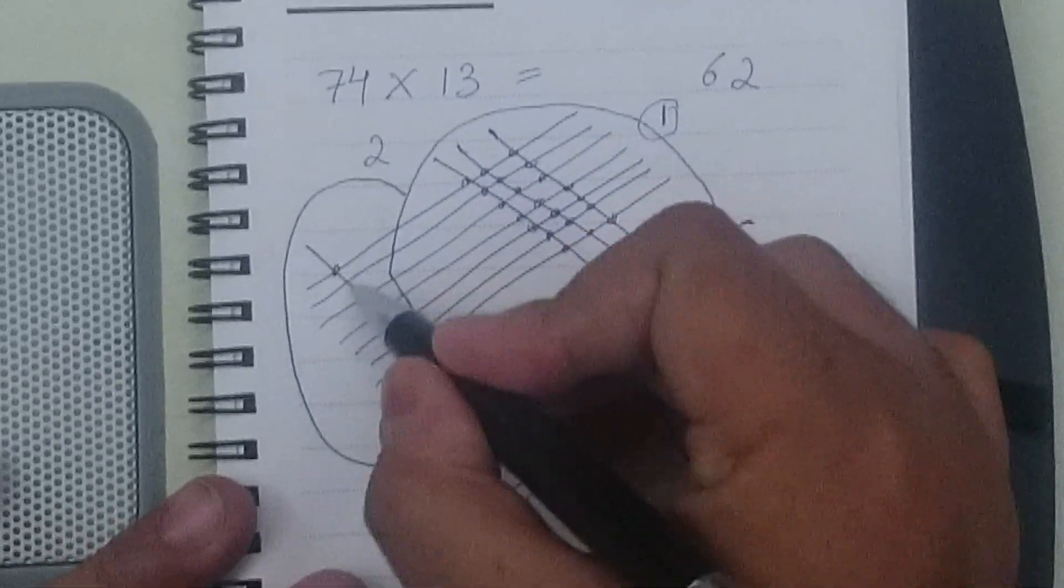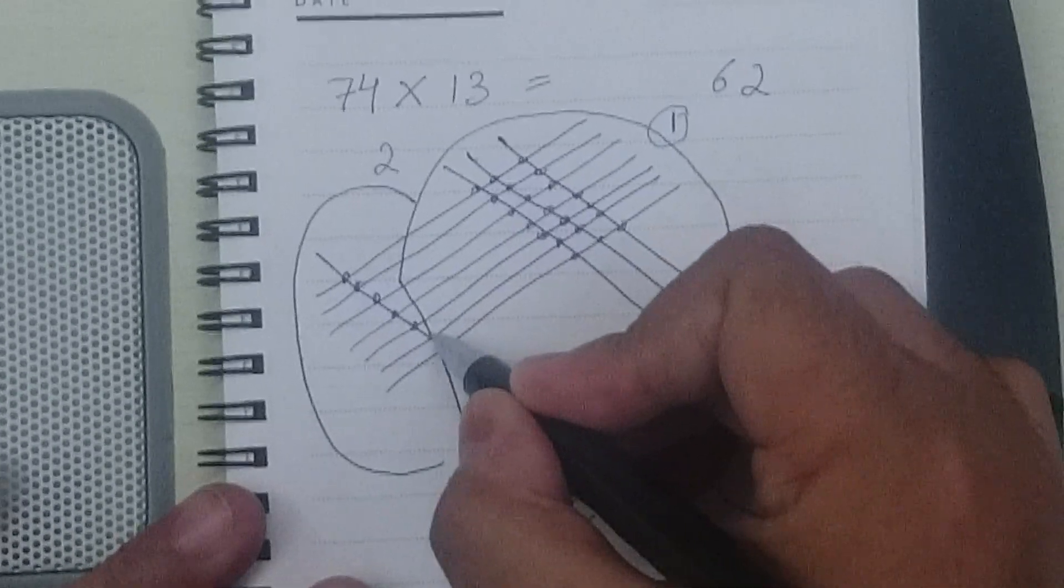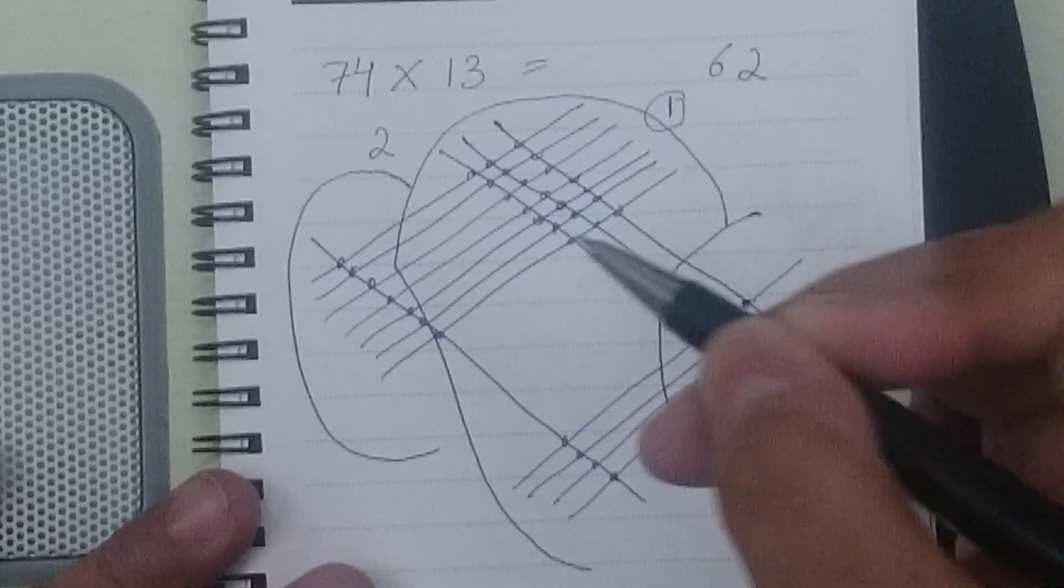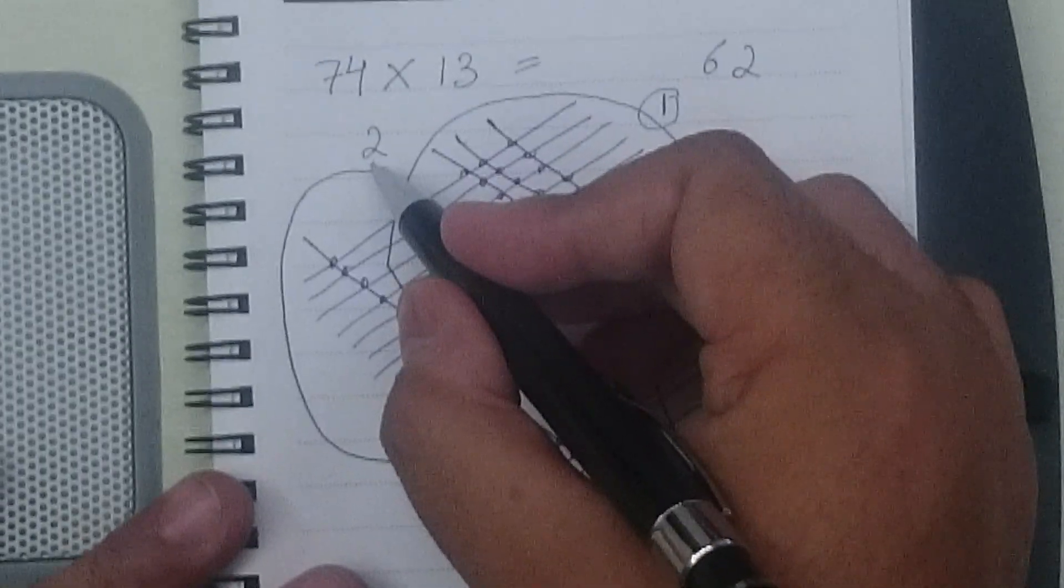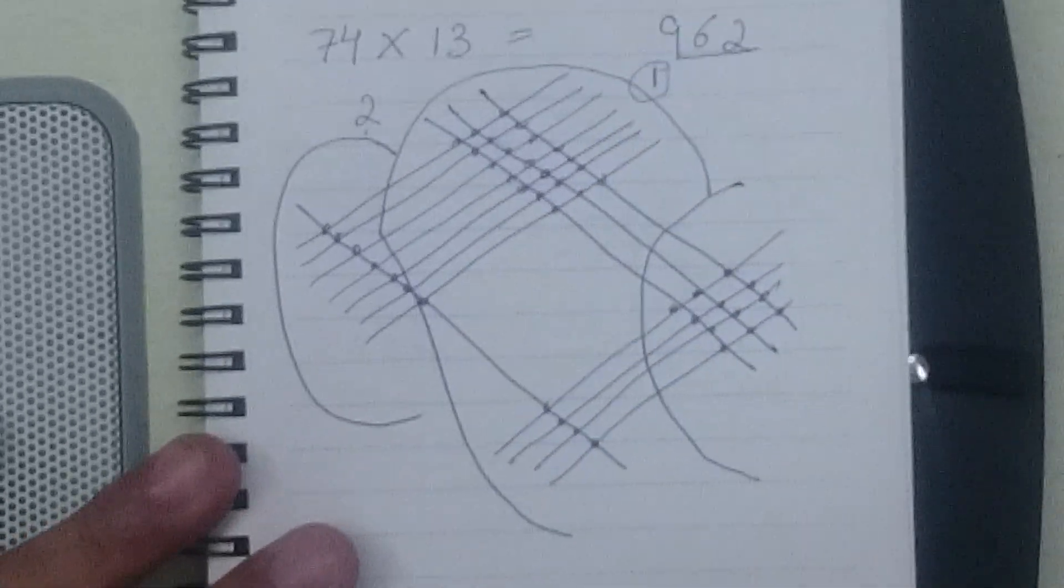Now let's count in the third section. 1, 2, 3, 4, 5, 6 and 7. So 7 and 2 is 9. So 962 should be your answer. Let's check it.